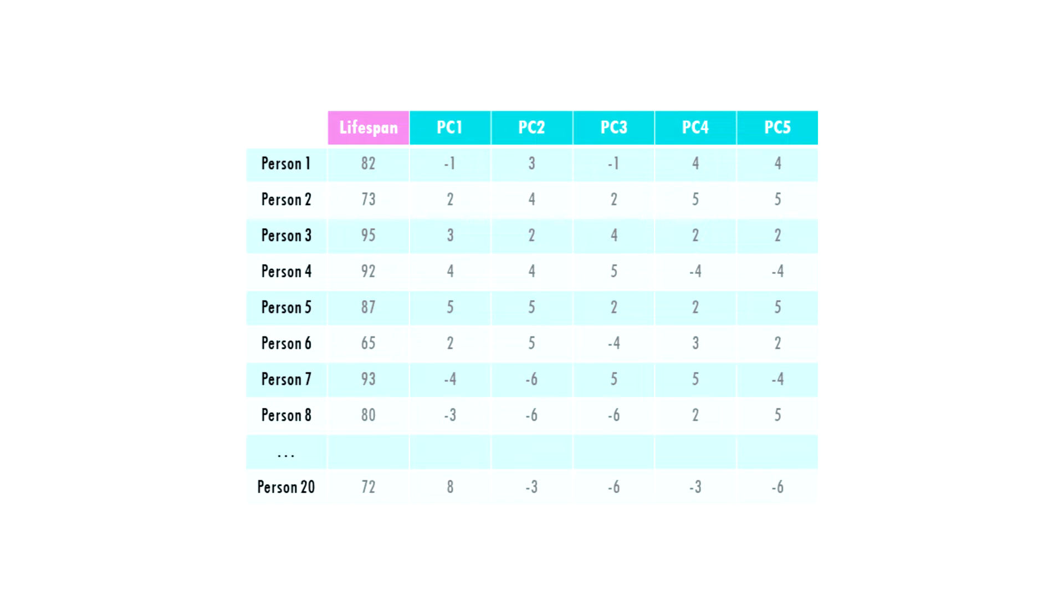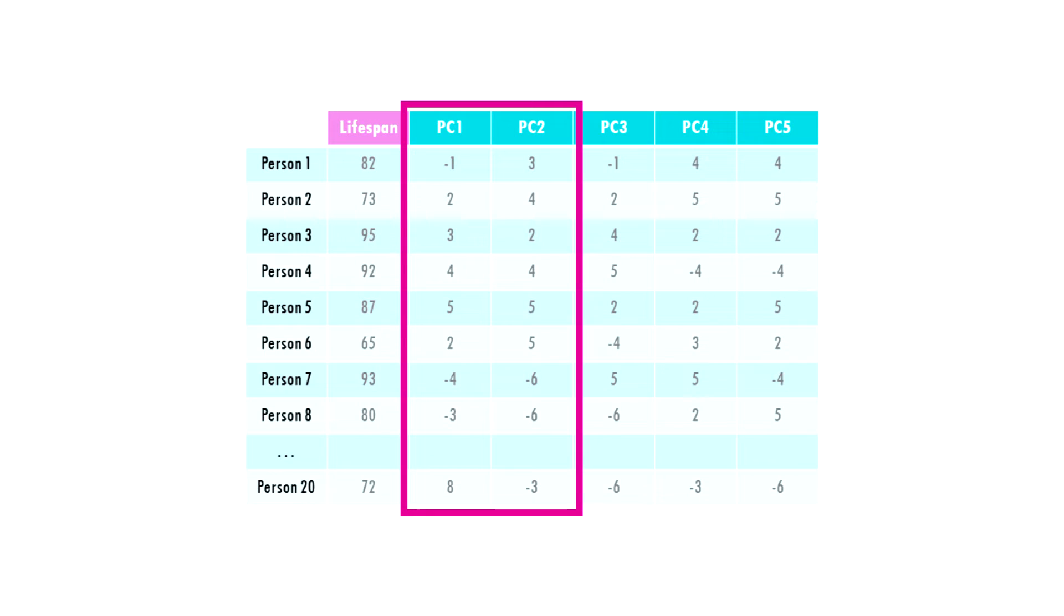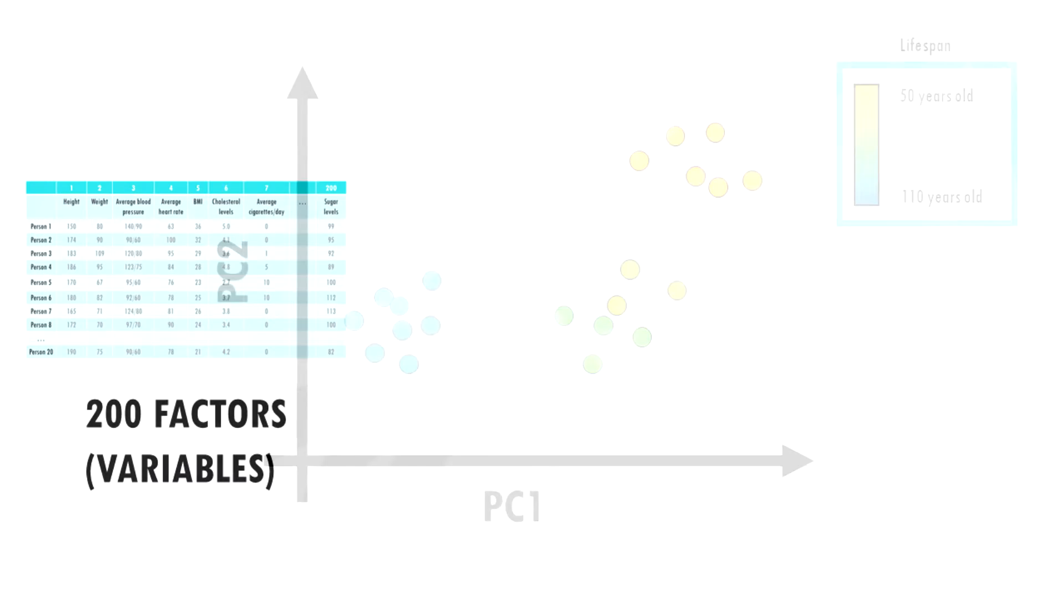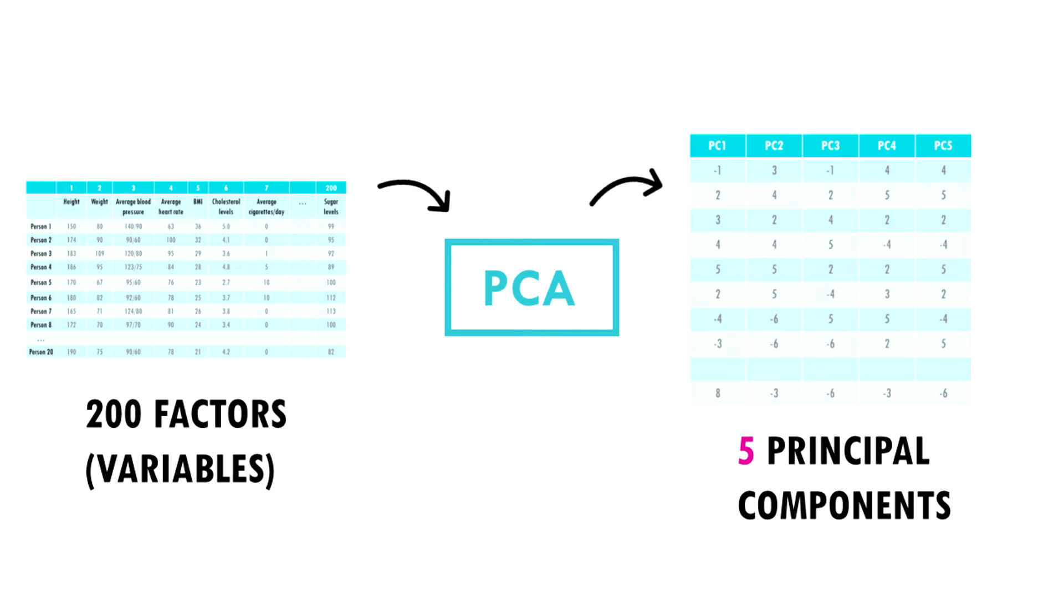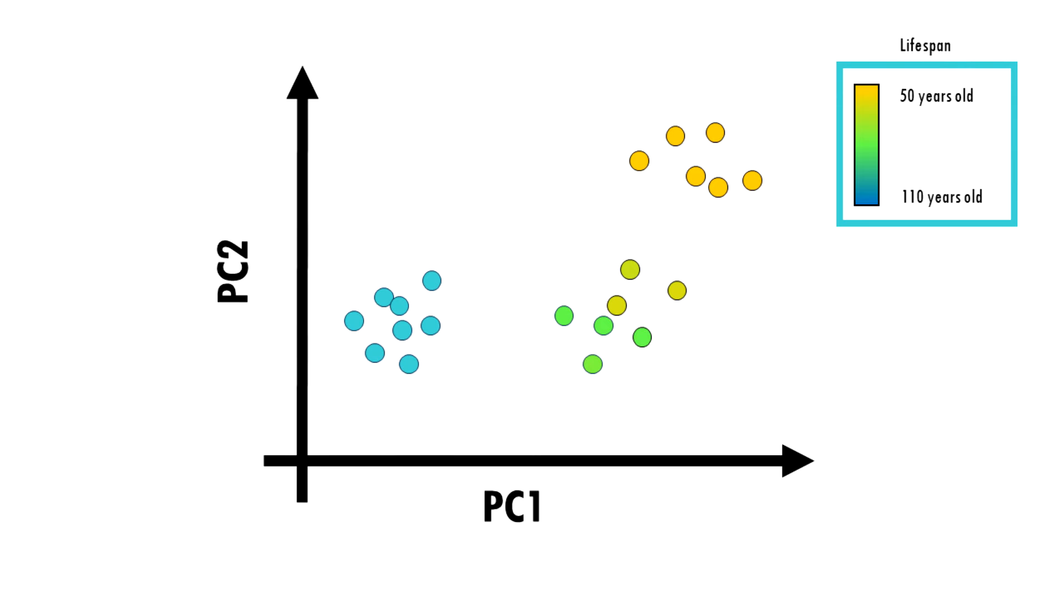But we cannot represent 5 dimensions in a 2D plot. The nice thing about PCA is that principal components are ranked from most important to least important. So let's just plot PC1 and PC2. This is our PCA plot, and each point is a person from our dataset. What if we colored the points by age? We can see that our samples already clustered together really nicely by age. Those people who live longer seem to be grouped together, those who live shorter tend to be grouped together. So PCA took into account all our biological factors, transformed them into new variables called principal components, and if we just take the first two, we actually already see some interesting trends in our data.